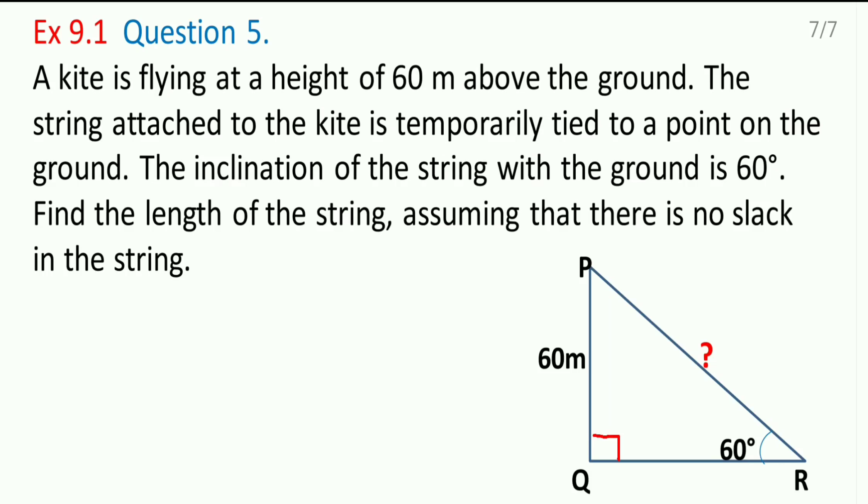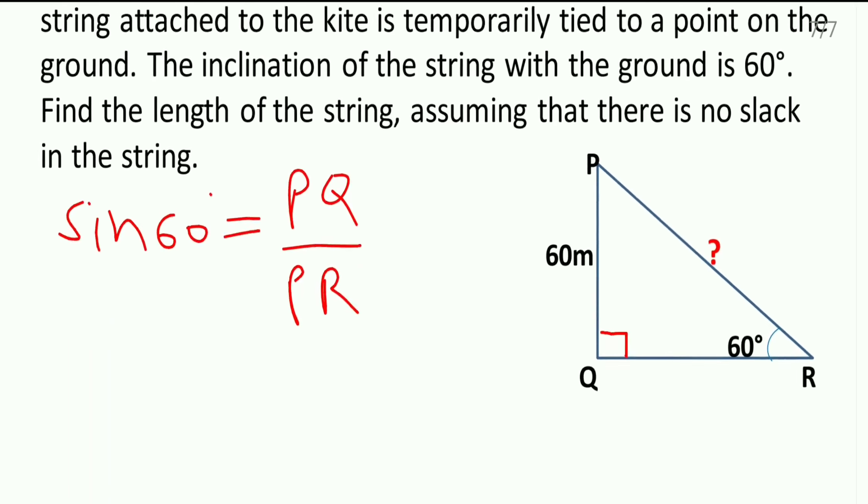So to get PR, we will use the trigonometric ratios for sine 60 degrees. Right? So here I will write down sine 60 degrees which is equal to the opposite side PQ by the hypotenuse PR. Let us substitute the values here.